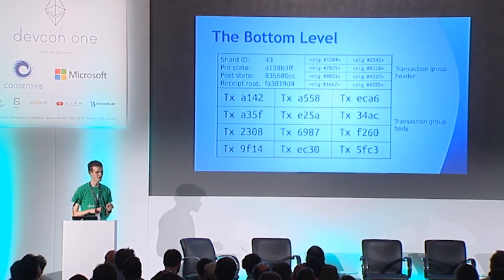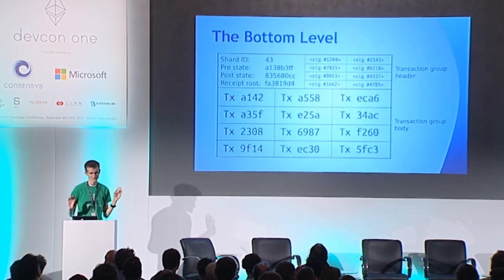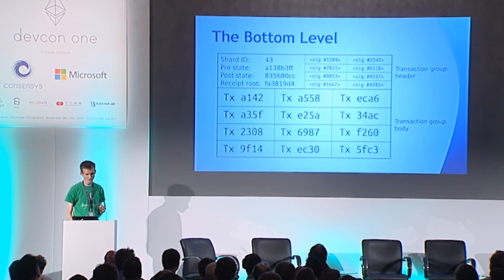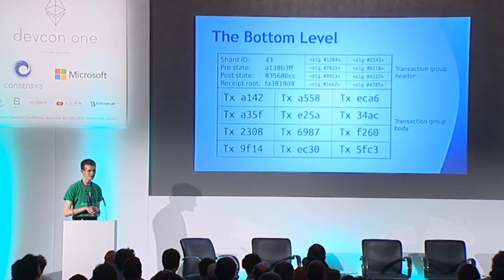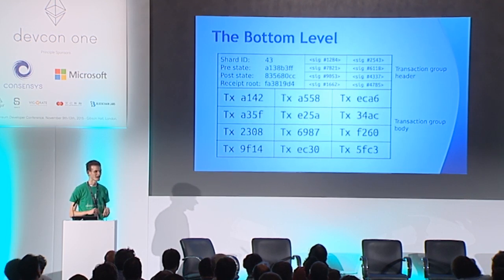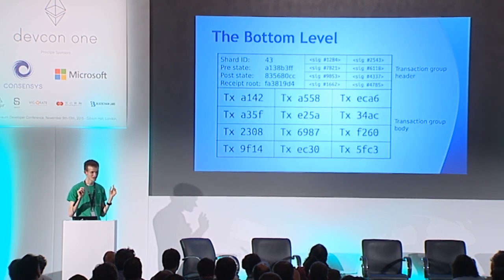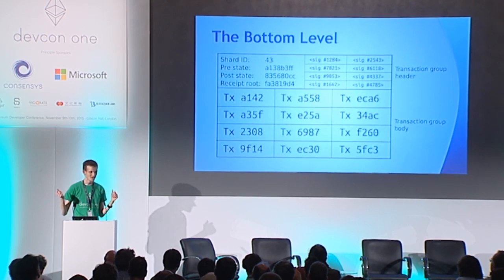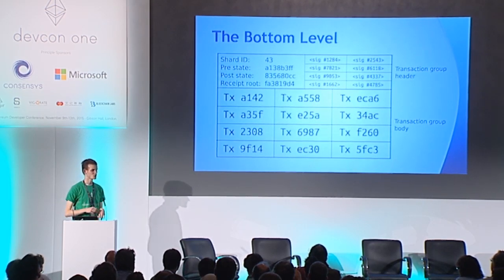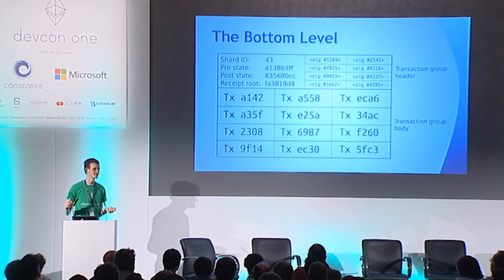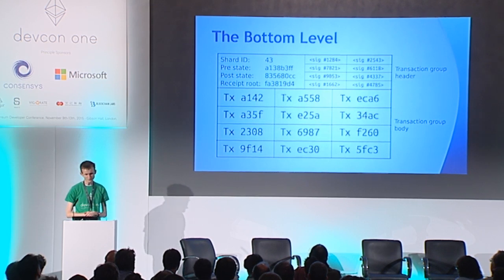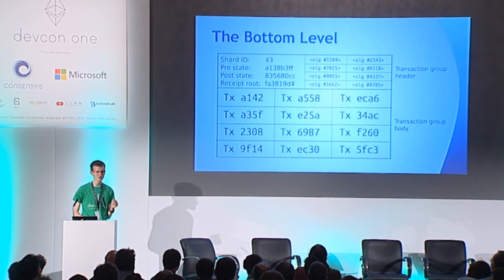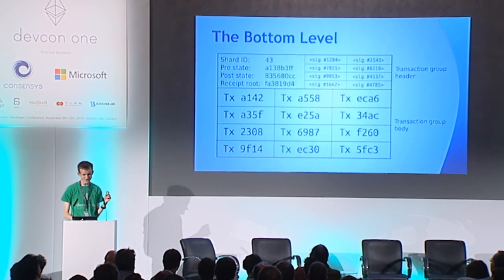To go into this in more detail: the way this would work from a transaction standpoint is you have two levels. In Bitcoin and Ethereum, you have a block header which is small, then a set of transactions which is large, and in the block header the set of transactions is represented by a Merkle root. Here we're going to do a two-level thing and create this object called a transaction group.